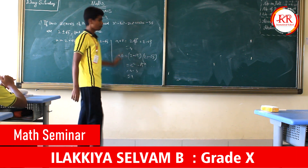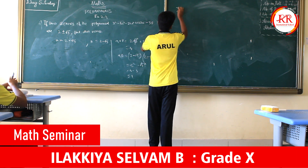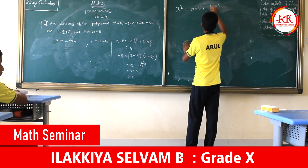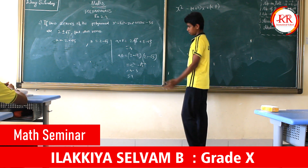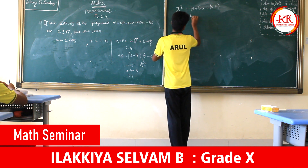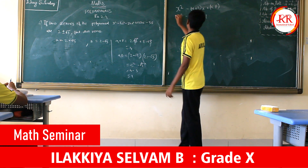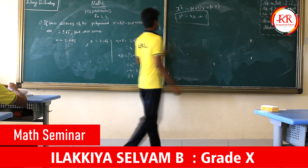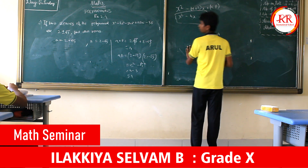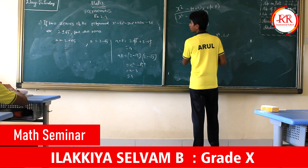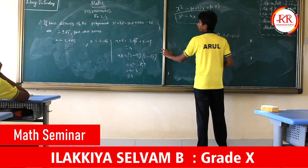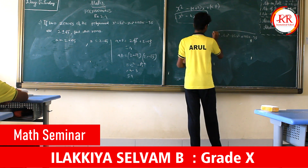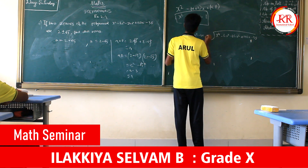Now we form a quadratic equation from these two values. The standard form is x² minus (alpha plus beta)x plus (alpha into beta). Substituting, alpha plus beta is 4 and alpha into beta is 1, giving us x² minus 4x plus 1. We then divide the original polynomial x⁴ minus 6x³ minus 26x² plus 138x minus 35 by this quadratic x² minus 4x plus 1.